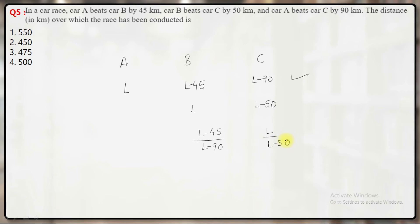Second time, the ratio of speeds should be L by L minus 50. So, I can equate them. When you try to simplify it, after cross multiplication, you will get L equal to 450 kilometers. So, the answer must be 450 kilometers.